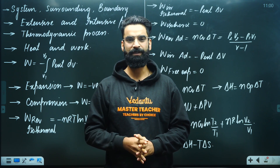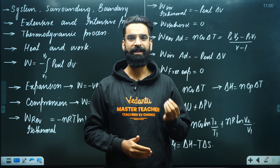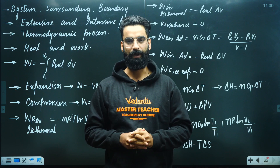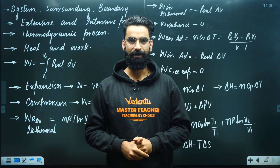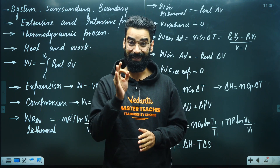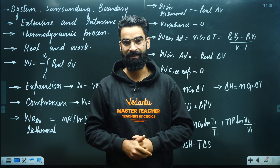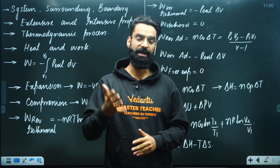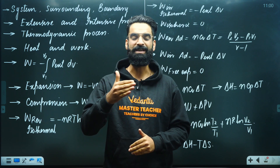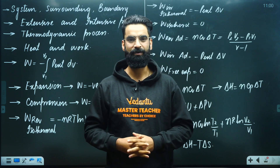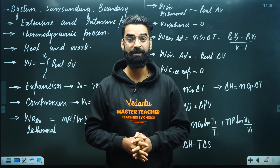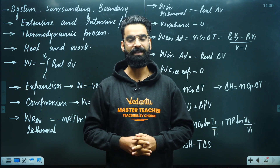Is boundary of different types? Starting with real boundary — real boundary is such a boundary which you can see exactly with your eyes, that this system and surrounding are different. Then you have got imaginary boundary — imaginary boundary is such a boundary that you cannot see with your eyes, but it differentiates the system from the surroundings. Then we have got diathermic boundary, which is a wall through which heat can pass. And any wall, any boundary through which heat cannot pass, we call that boundary as the adiabatic boundary.